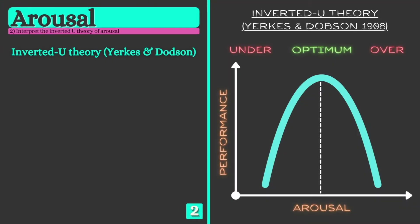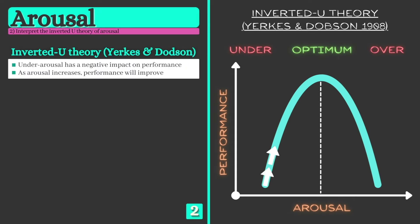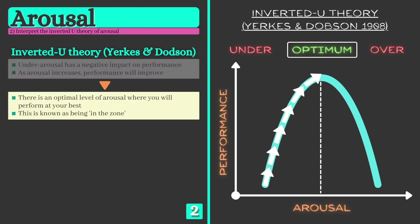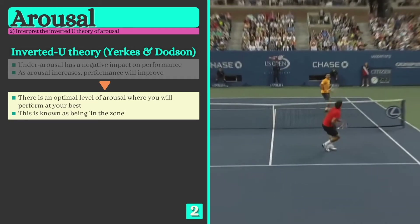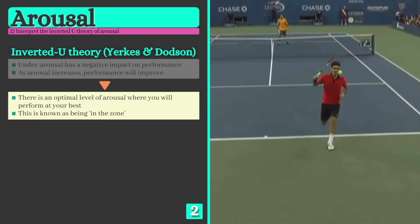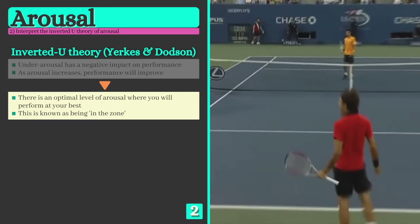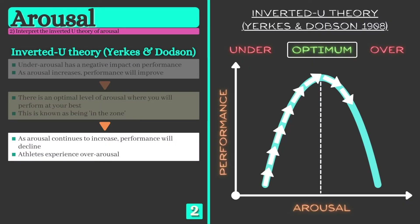In 1908, two psychologists named Yerkes and Dodson came up with a theory called the inverted U theory that explains the relationship between arousal and performance. According to this theory, as arousal increases, performance will also increase, but only until an optimal level is reached. We refer to athletes who reach this level as being in the zone. A flow state is achieved and performers are determined and focused on the task at hand. As arousal continues to increase beyond this point, performance will begin to drop.